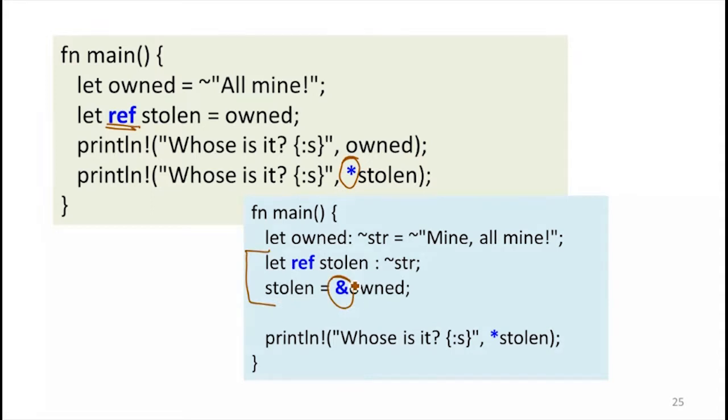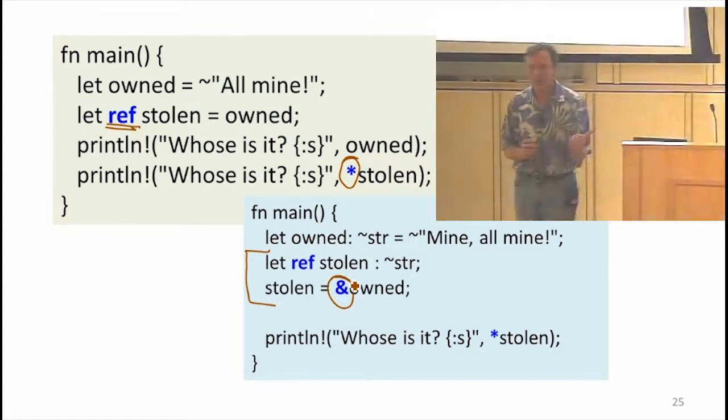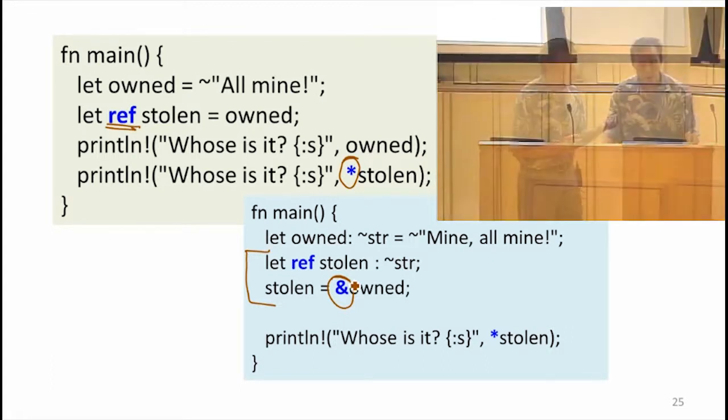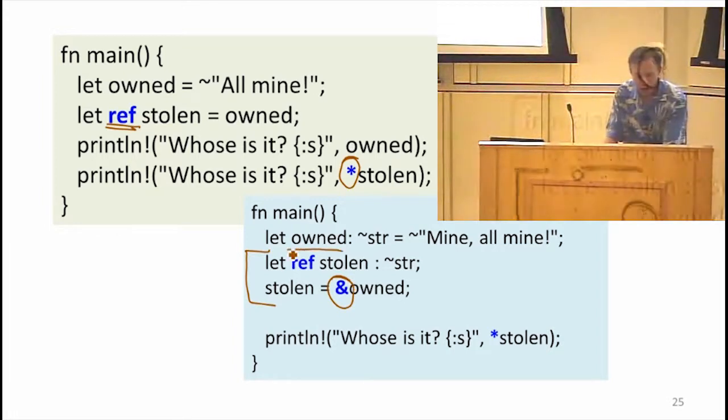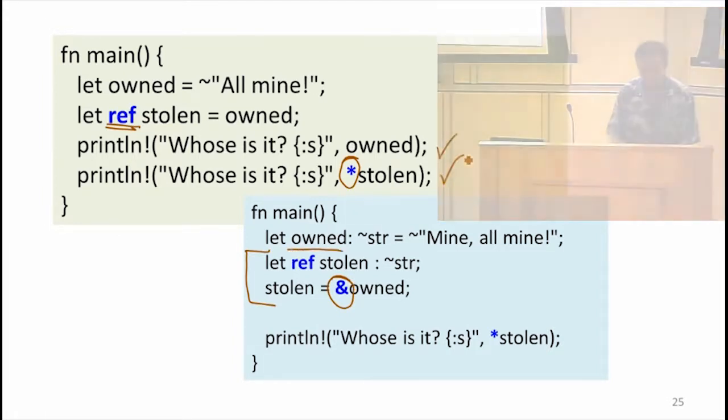We're following a pointer to get to its value. In this case, because we have ref, now we need the star. What the let ref is short for is actually having this borrow here. So having the ampersand, which means now instead of stealing, or instead of transferring ownership of the object and stealing it for the new reference, we're borrowing a reference to it. So now owned can still use it. Both of these are okay.